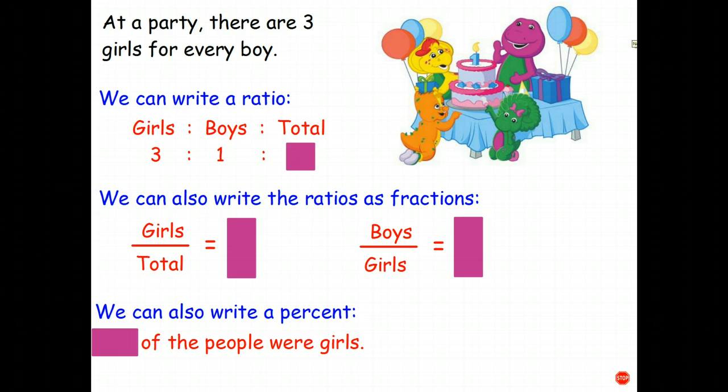Let's have a look at this particular situation. At a party, there are three girls for every boy. So we can write a ratio. It doesn't mean there's only three girls there. It just means that for every boy that's there, there's three times as many girls.